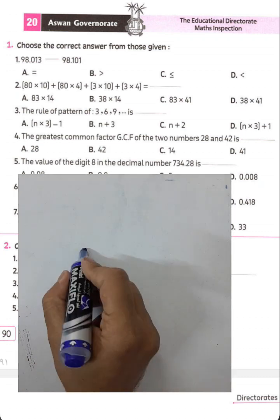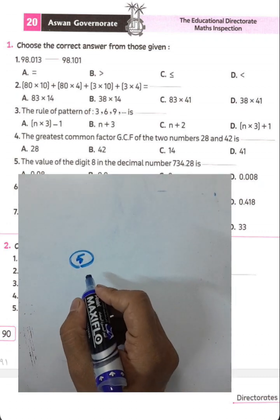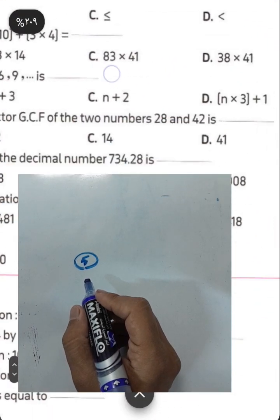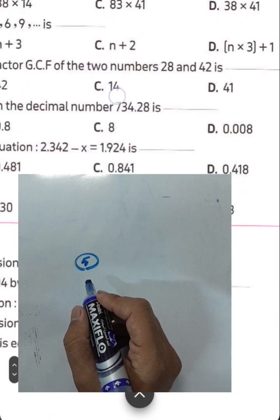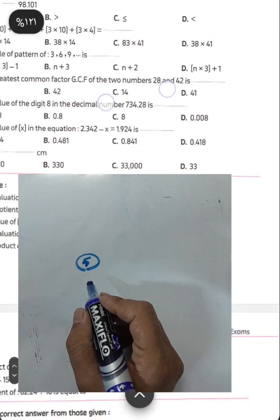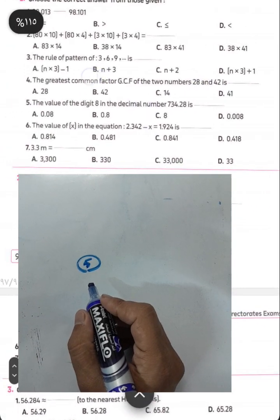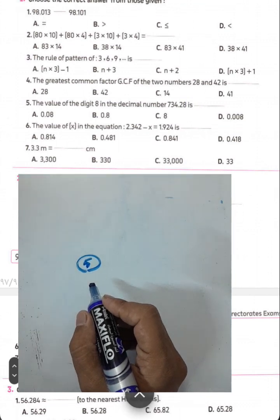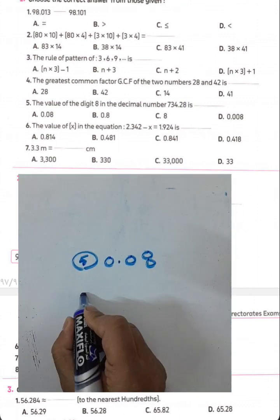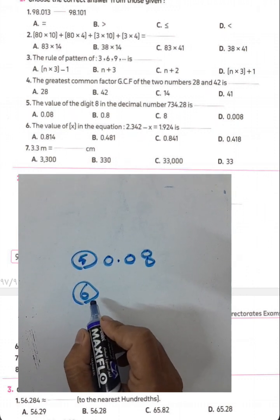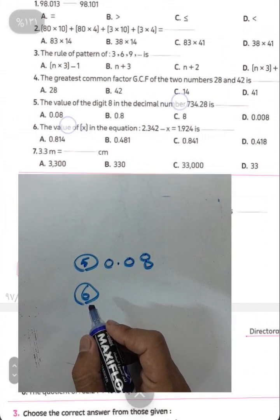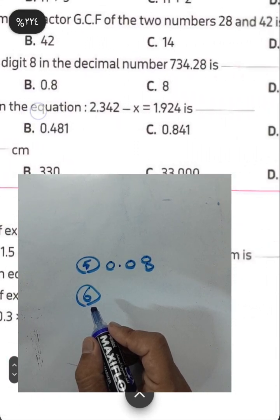Question number five: the value of the digit 8 in the decimal number 734 and 28 hundredths. The digit 8 lies in the hundredths place, so the value will be 8 hundredths. Question six: find the value of x in the equation 2.342 subtract x equals 1.924.